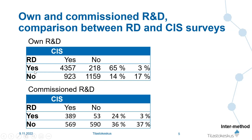Still, there are some cases — for example, 218 cases where a company answered no on the CIS but yes on the national R&D survey. Most striking is the commissioned R&D question: when a company answered no on the national survey, it answered yes on the CIS almost as often as no — which is quite strange and warrants further investigation.